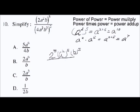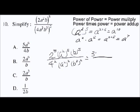Same thing in the bottom — another three terms: 4 to the power of 2, a squared to the power of 2, and b cubed to the power of 2. Expanding these: 2 to the power of 5 equals 32; a to the power of 2 to the power of 5 — power of the power, so we multiply — gives a to the power of 10; and b to the power of 5.